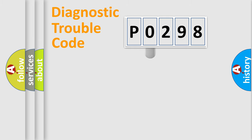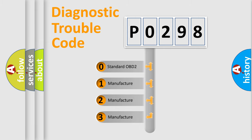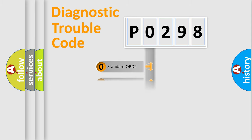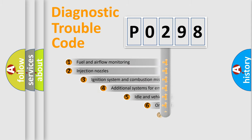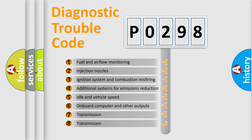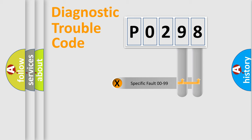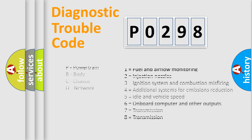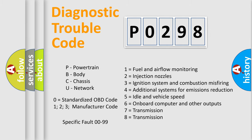This distribution is defined in the first character of the code. If the second character is expressed as zero, it is a standardized error. In the case of numbers one, two, or three, it is a more specific manufacturer error. The third character specifies a subset of errors. The distribution shown is valid only for the standardized DTC code. Only the last two characters define the specific fault of the group. Such a division is valid only if the second character code is expressed by the number zero.